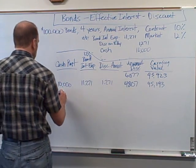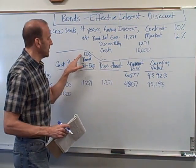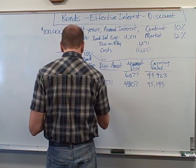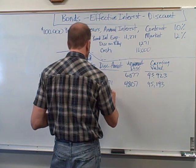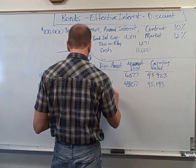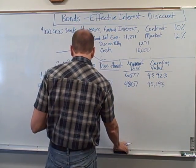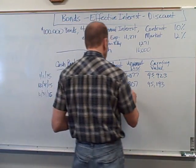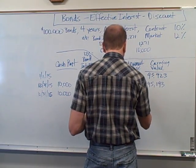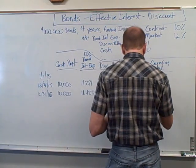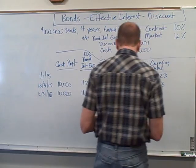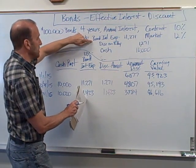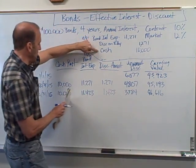Moving to year two (2016): the cash payment is still $10,000. Now we calculate interest expense on the new carrying value: 12% × $95,193 = $11,423. The discount amortization is $11,423 − $10,000 = $1,423. Subtracting $1,423 from the unamortized discount of $4,807 gives us $3,384. The new carrying value is $100,000 − $3,384 = $96,616. The journal entry: Bond Interest Expense $11,423, Discount on Bonds Payable $1,423, Cash $10,000.